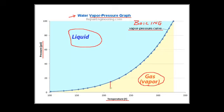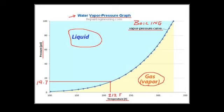To see how this graph works, let's use a couple of examples. Many people, when asked if they know the boiling temperature of water, will answer that it boils at 212 degrees Fahrenheit. This answer is partially correct. As shown by the graph, water does boil at 212 degrees Fahrenheit at the standard atmospheric pressure at sea level of 14.7 psi. However, notice that the boiling temperature of water changes with its pressure. In general, lower boiling temperatures correspond with lower pressures, and higher boiling temperatures correspond with higher pressures.